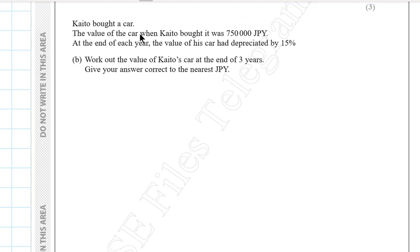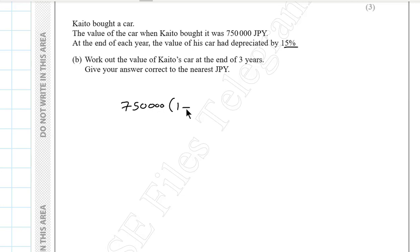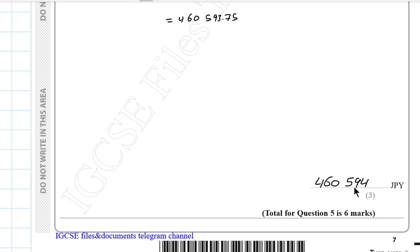Question 5b. Keato bought a car worth 750,000 Japanese yen. At the end of each year the value depreciates by 15%. Using the depreciation formula: 750,000 × (1 − 0.15)³ = 750,000 × 0.85³ ≈ 460,593.75. Rounded to the nearest Japanese yen, the answer is 460,594 yen.